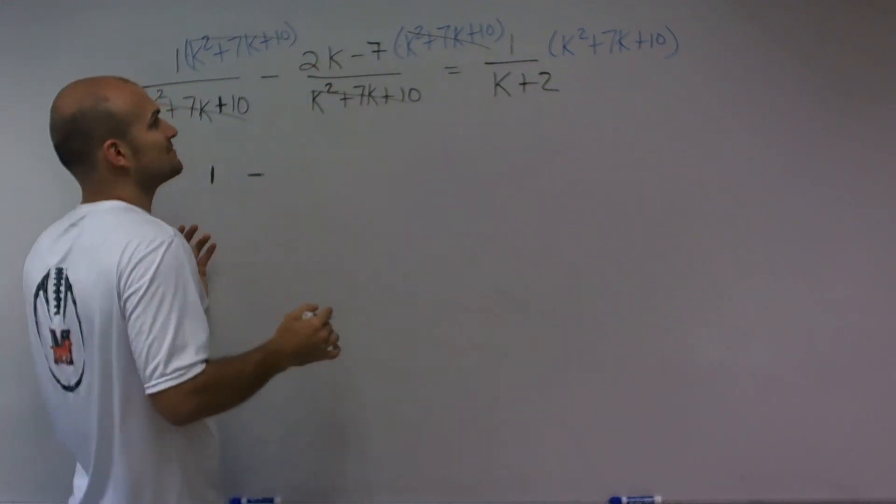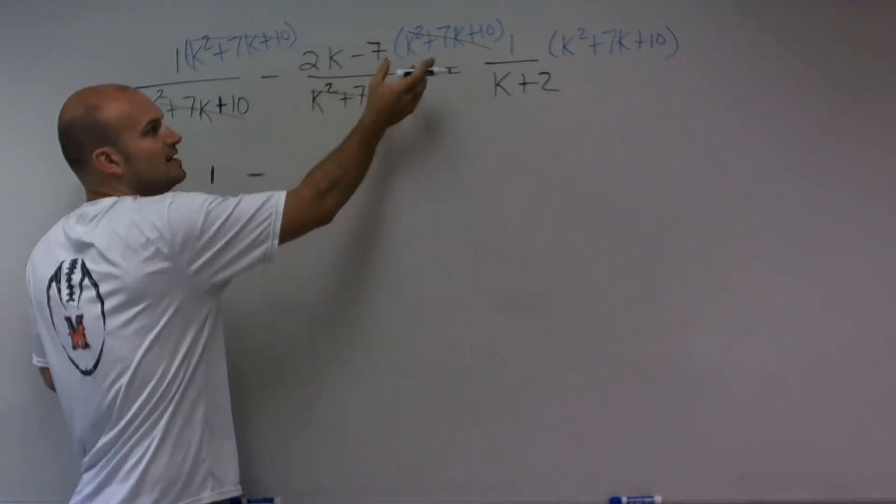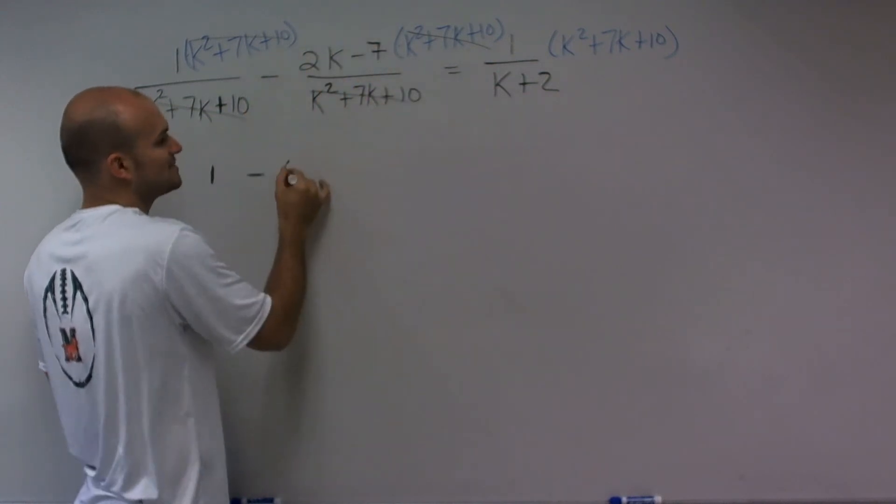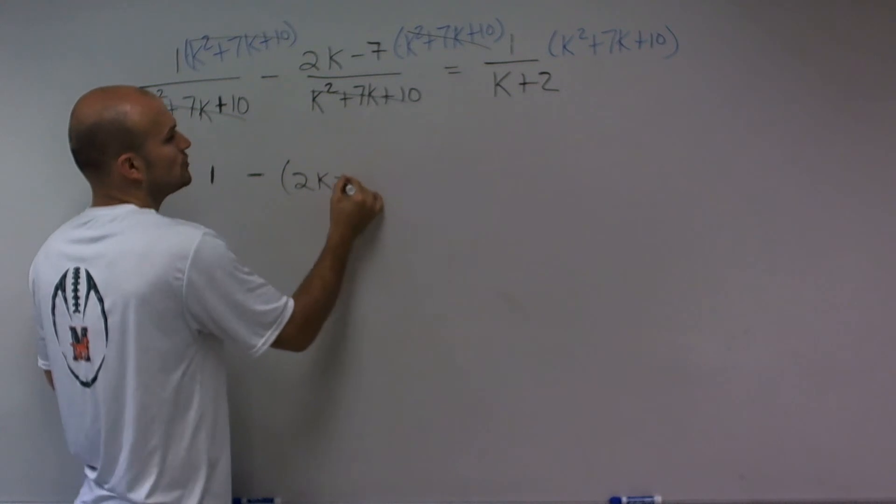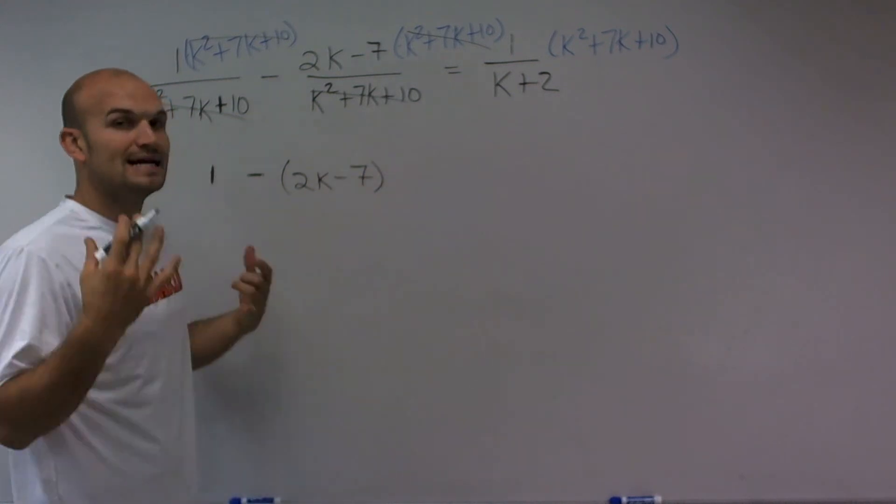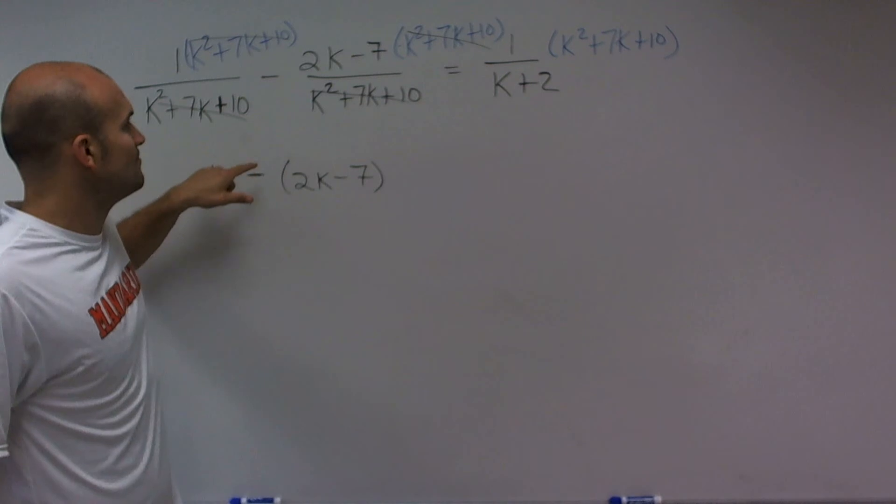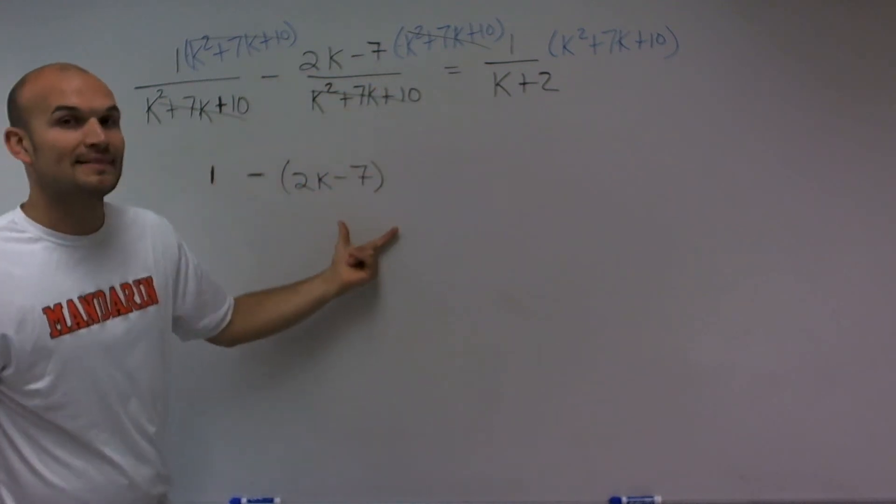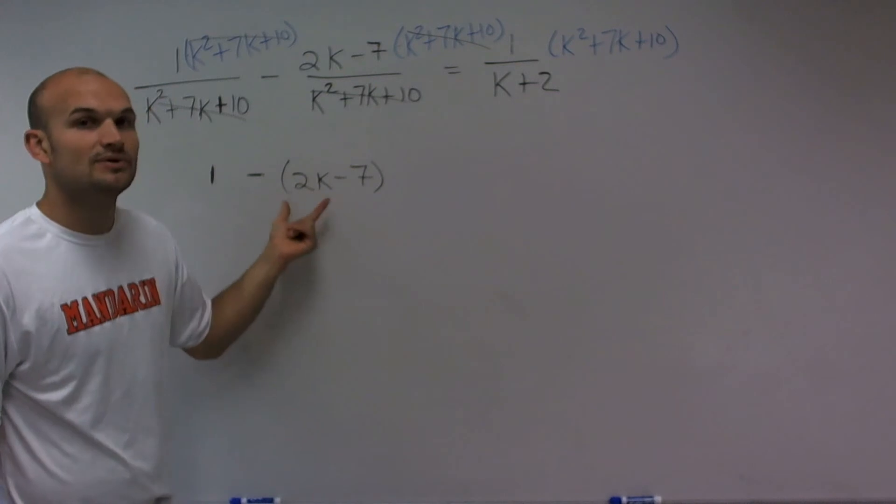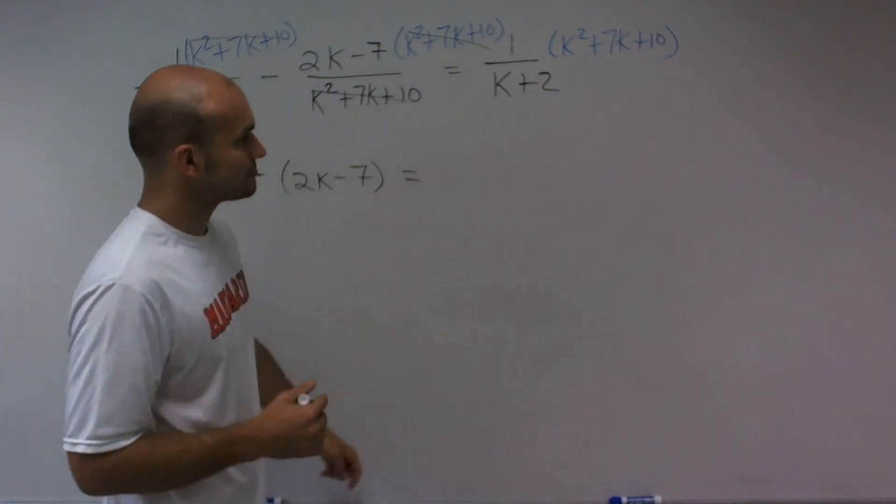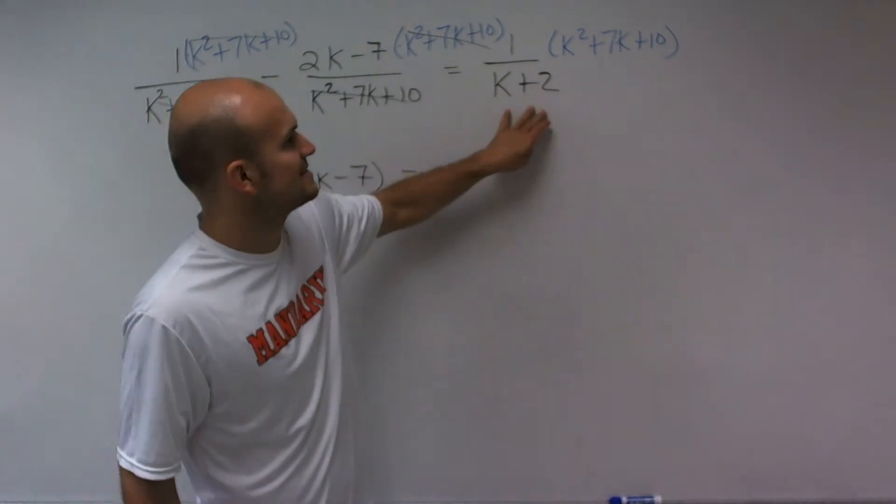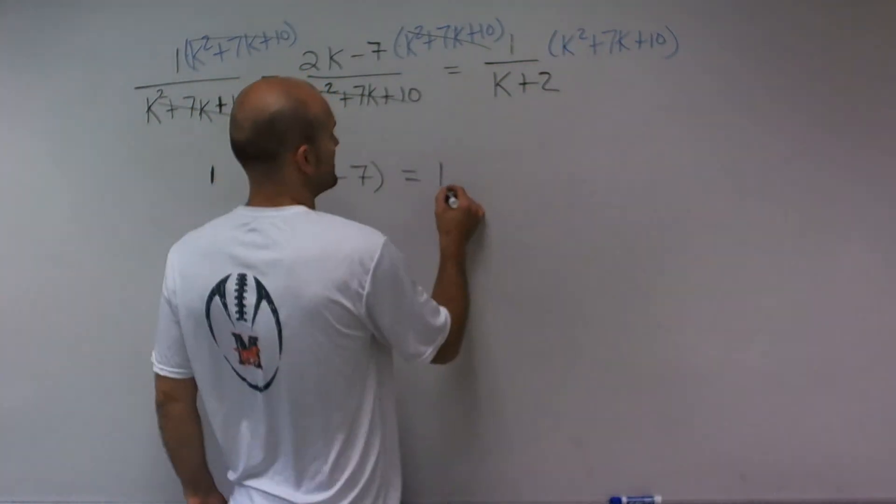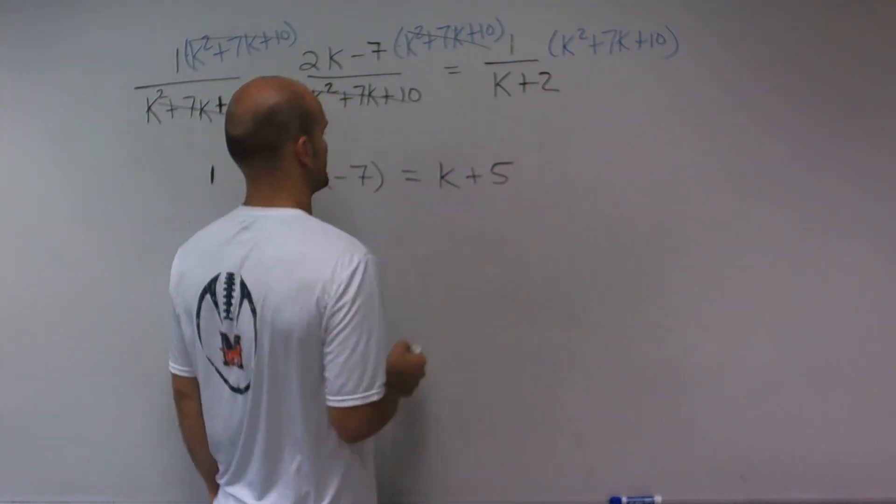The big mistake students forget is this is minus this whole term, right? So if I eliminate the bottom, I'm still subtracting 2k minus 7. Do not make the mistake of just writing it minus 2k minus 7. You've got to put parentheses around the negative 2k minus 7. Equals, I should have left that up there. We saw that this divides into it by k plus 5.